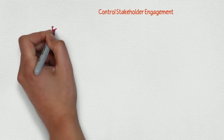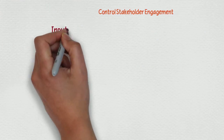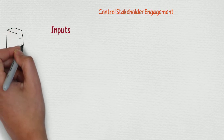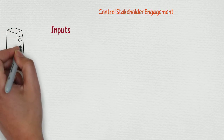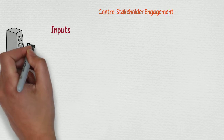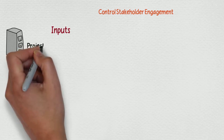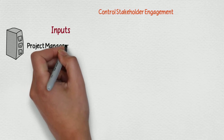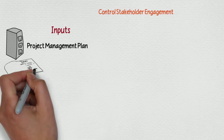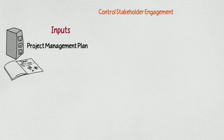The inputs to Control Stakeholder Engagement are, of course, your project management plan, which includes any of the plans you have already set in motion for how to control your stakeholders and how to get them mostly engaged. Also, your issue log — all the issues that you are having, that have been recorded, that you're working on, or that are affecting your project.